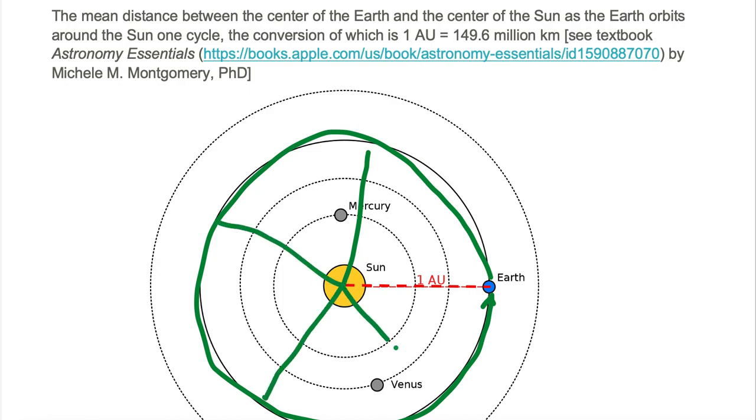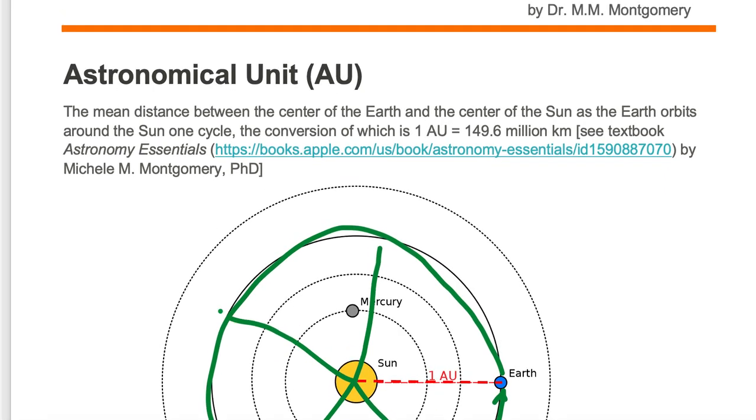We find the average radius, and that average is the mean distance between the center of the Earth and the center of the Sun, and that mean distance is called an astronomical unit.